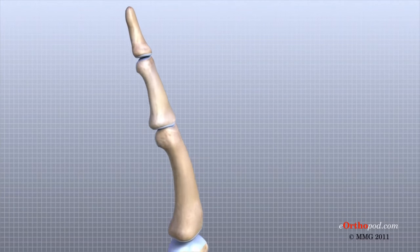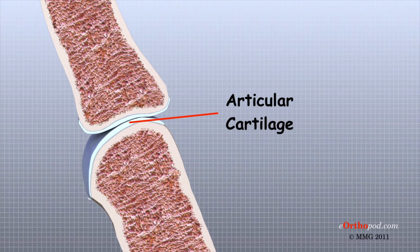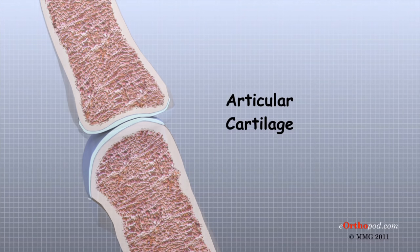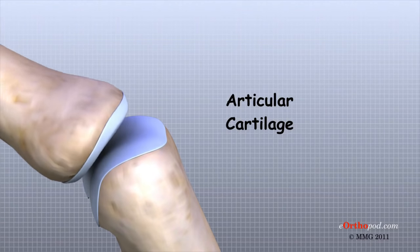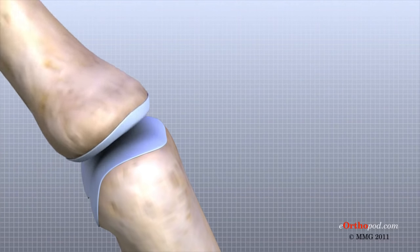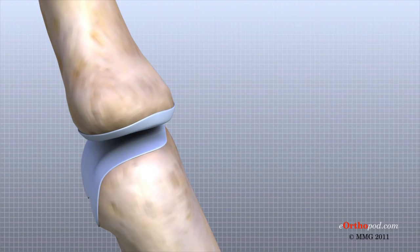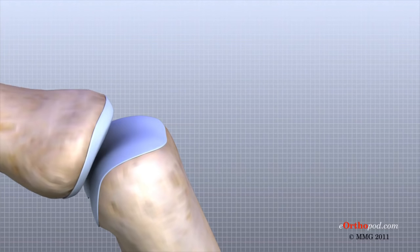The joints of the hand, fingers, and thumb are covered on the ends with articular cartilage. This white, shiny material has a rubbery consistency. The function of articular cartilage is to absorb shock and provide an extremely smooth surface to facilitate motion. There is articular cartilage essentially everywhere that two bony surfaces move against one another or articulate.